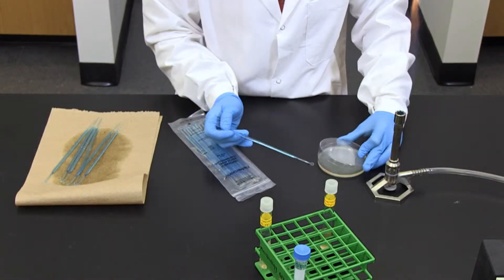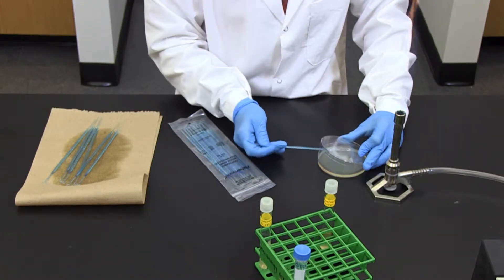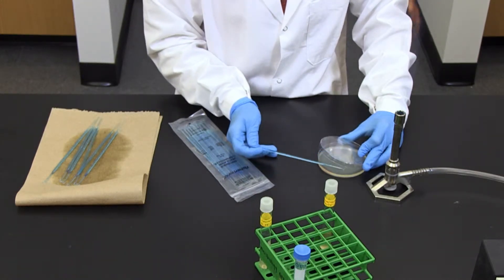From the edge of area 1, make 7 or 8 straight streaks to the opposite side of the plate with a sterile inoculating loop.